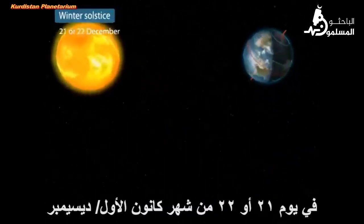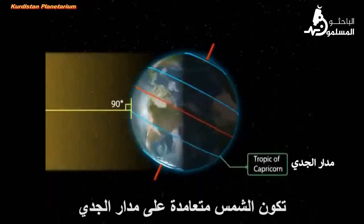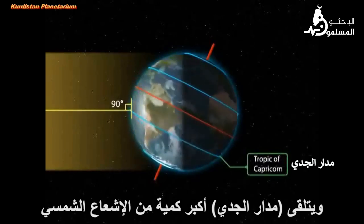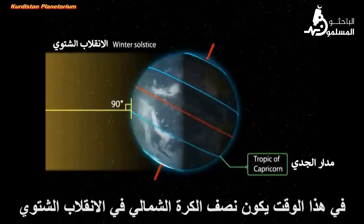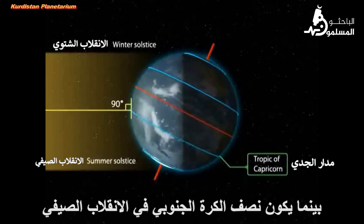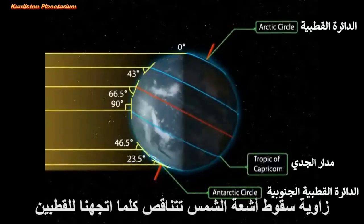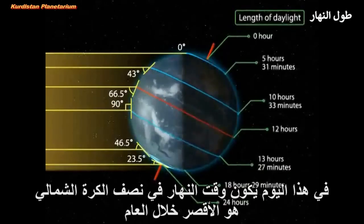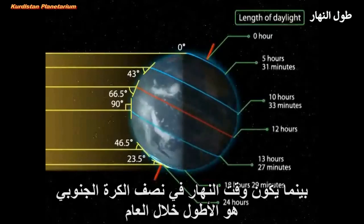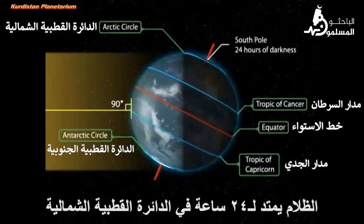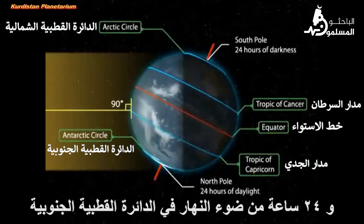Winter solstice: on the 21st and 22nd of December, the overhead Sun is over the Tropic of Capricorn, which receives the largest amount of solar radiation. On this day, the northern hemisphere is in the winter solstice, while the southern hemisphere is in the summer solstice. The angle of the Sun decreases towards the poles. The length of daytime in the northern hemisphere is the shortest in the year, while that of the southern hemisphere is the longest. There are 24 hours of darkness at the Arctic Circle, and 24 hours of daylight at the Antarctic Circle.